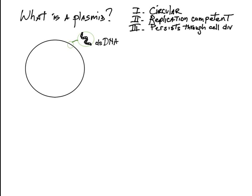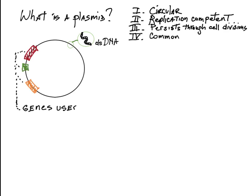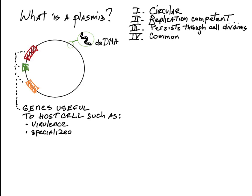Many bacteria contain plasmids. Many plasmids carry genes useful to the bacterial host, such as encoding virulence factors, specific metabolic capabilities, or resistance to certain antibiotics.